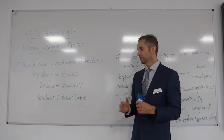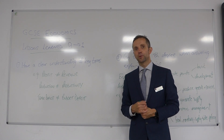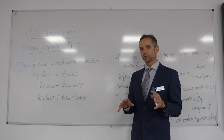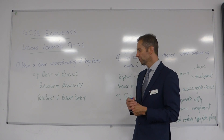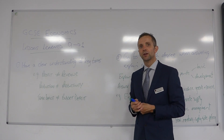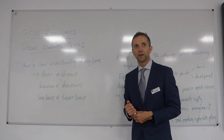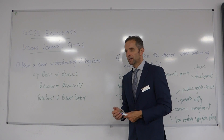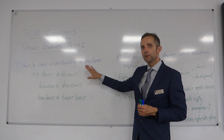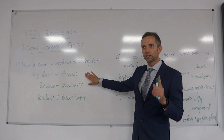Another often confused pair is trade deficit and budget deficit. A trade deficit relates to imports and exports — where the value of imports is greater than the value of exports. A budget deficit relates to government spending — where money flowing out of government coffers is greater than the money coming in from taxes. So that's government spending being greater than taxation. You must be careful when asked to explain what key terms mean.